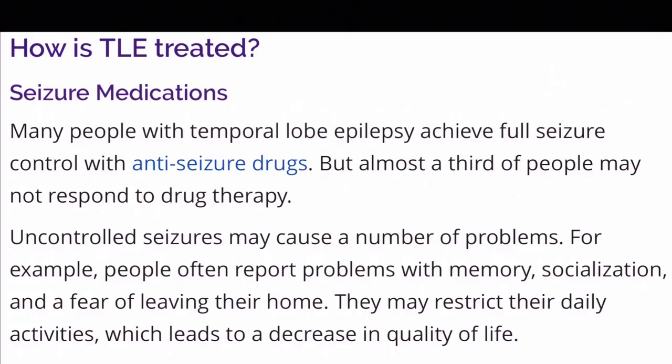Once a patient has been confirmed to have temporal lobe epilepsy by a neurologist, they're going to want to get treated. The most common first step is to try seizure medications. Many people with temporal lobe epilepsy achieve full control of their seizures with these anti-epileptic drugs, but almost a third of people may not respond well — they might have bad side effects or the medications might just not control the seizures at all.